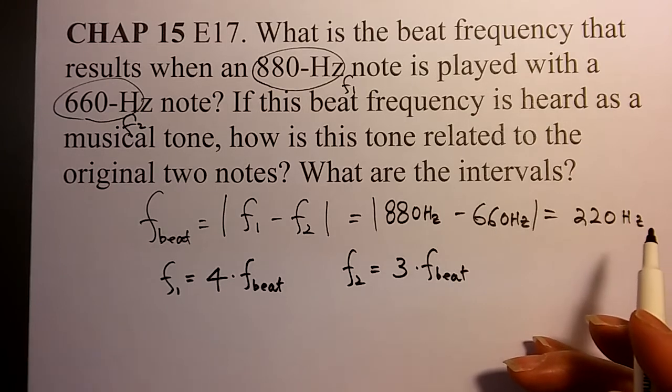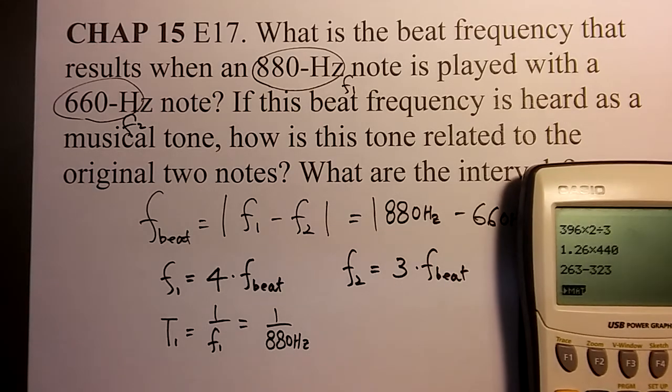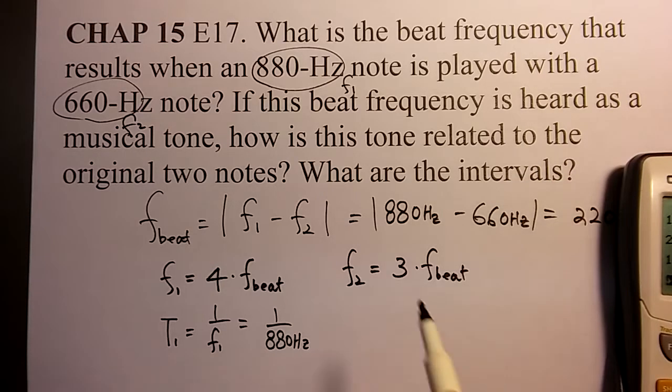That is the frequency. And then T1 could be 1 over F1, which is 1 over 880Hz. So 1 divided by 880, then becoming 1.136 milliseconds.